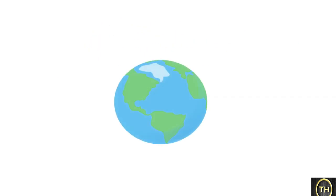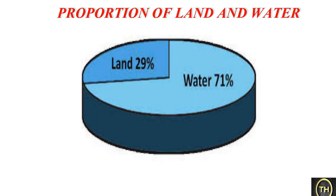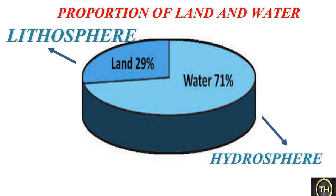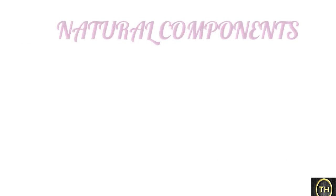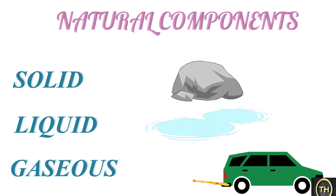The atmosphere is the layer of air that surrounds the earth. The surface of the earth comprises water and land, i.e., the hydrosphere and lithosphere. Of these, the hydrosphere occupies a much larger part than the lithosphere, as seen in the picture given. Now, we will learn some natural components: solid, liquid and gaseous. We use these components to fulfill our requirements.